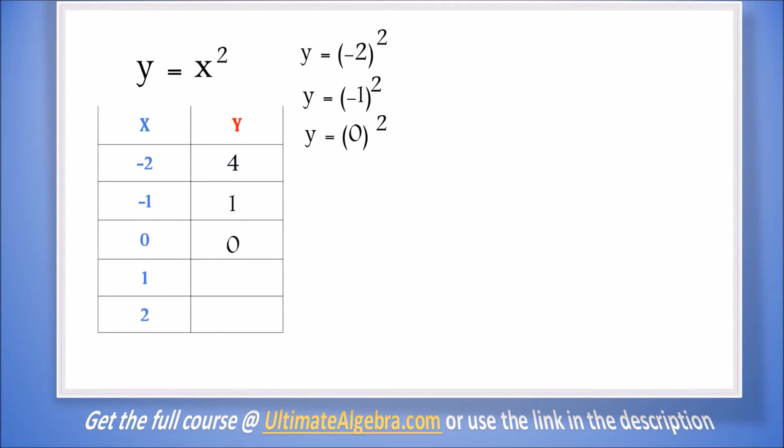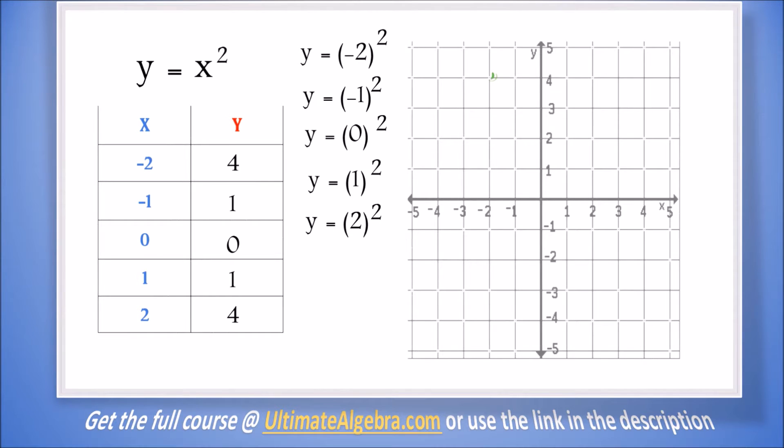When x is 0, we square 0 to get y = 0. When x is 1, we square 1 to get y = 1. When x is 2, we square 2 to get y = 4.